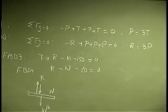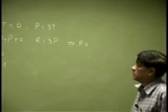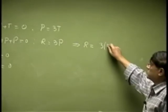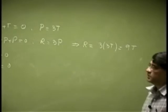Those are the actual equations for each of these free body diagrams. Now from here I could say that R is going to be 3 times P, which is 3 times T, or 9 times the tension.